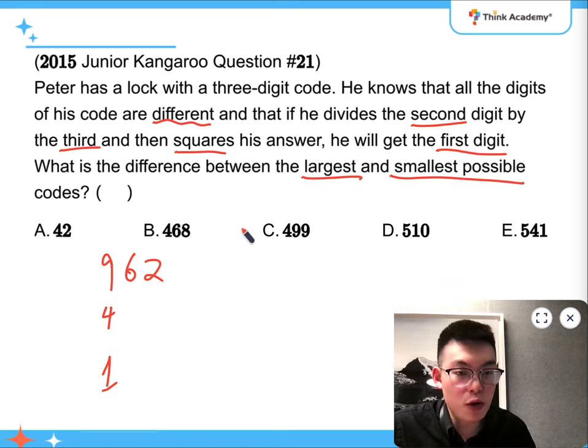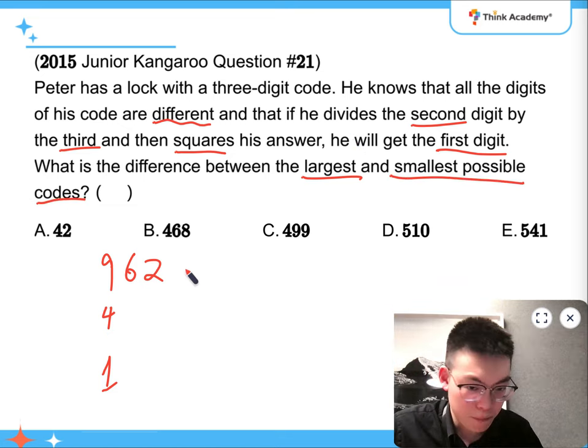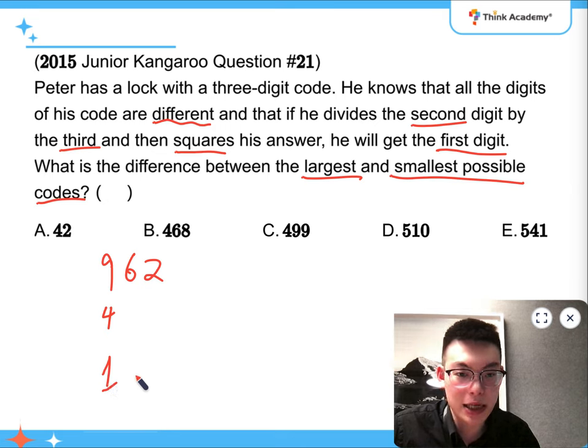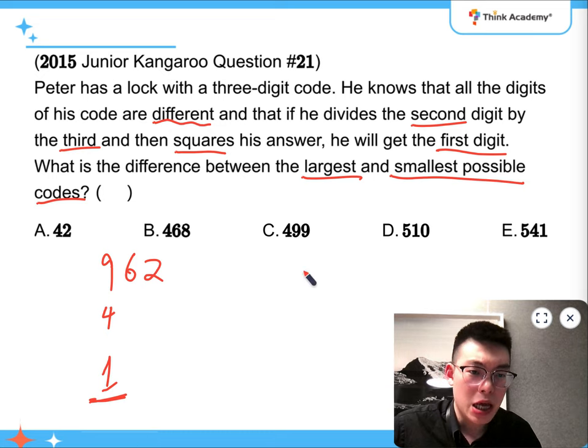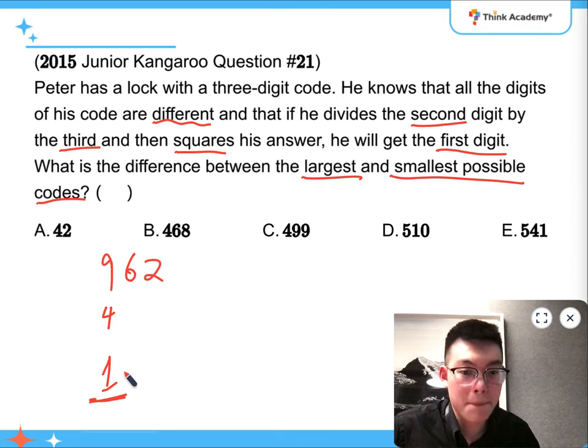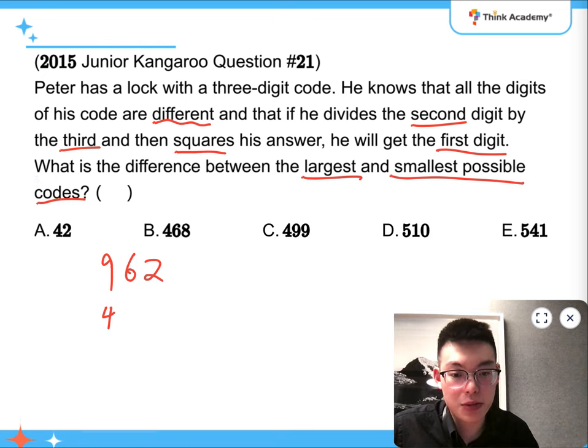Now, if I want to find the smallest possible one, I need to look at 1. But if something divided by something else is 1, it means that the second and third digit has to be the same. But since all the codes are different, it can't be 1, which means I have to resort to 4.